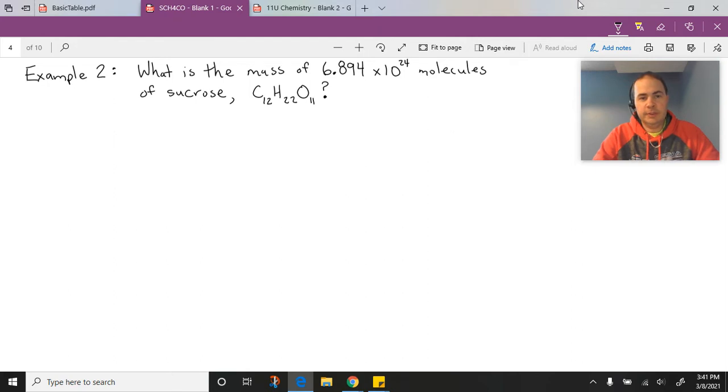So C12H22O11 is our formula. Now, if you remember what we've talked about previously, we know that from a number of molecules, we can find a number of moles. And from a number of moles, we can determine what the mass would be. So we've got a couple steps in here that we need to tackle.